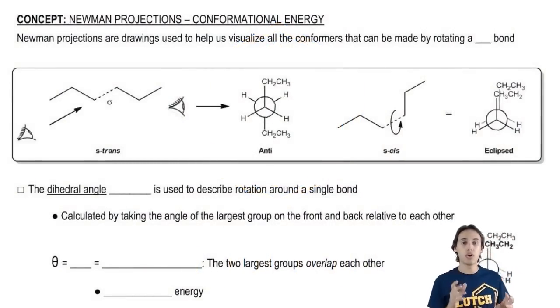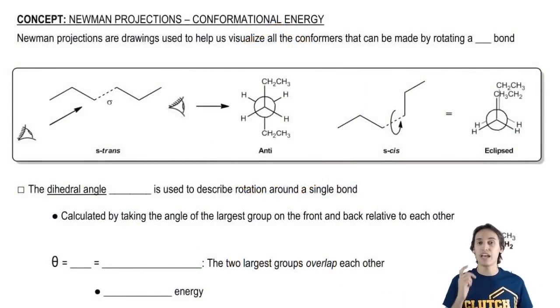So Newman projections are all about finding the different energy levels that conformers can make by rotating a sigma bond.